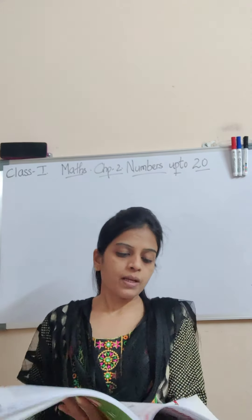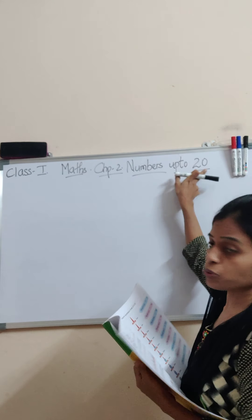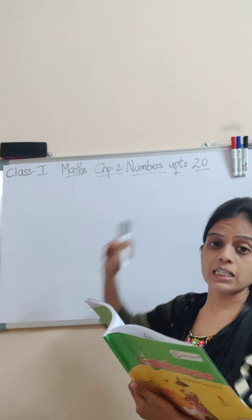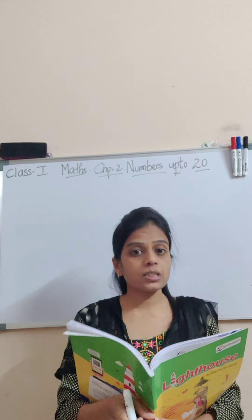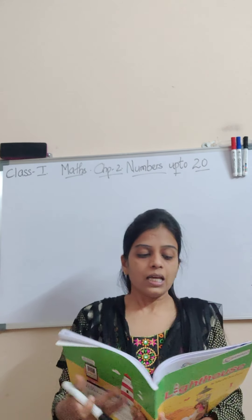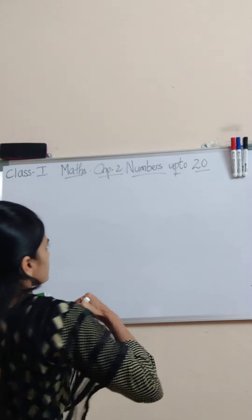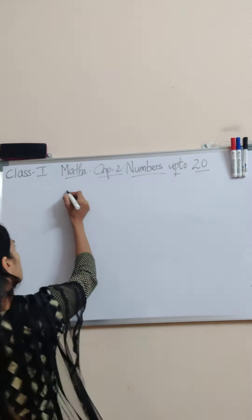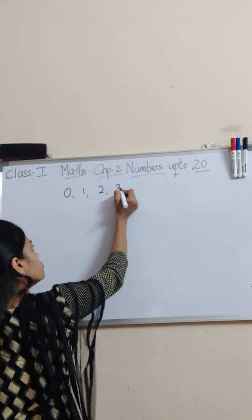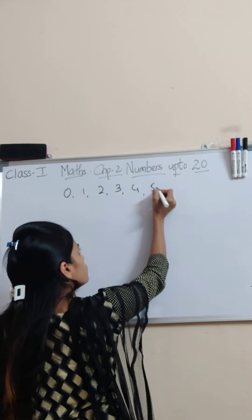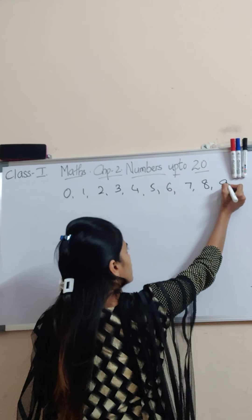Students, chapter number 2 is 'Numbers up to 20.' In lesson number 1, chapter 1, you have learned about the numbers up to 9. Now let us once recap. Numbers up to 9: 0, 1, 2, 3, 4, 5, 6, 7, 8, 9.